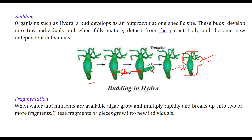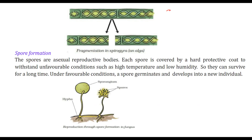Fragmentation: when water and nutrients are available, algae grow and multiply rapidly. The algae break up into two or more fragments, and these fragments grow into new individuals. The algae disintegrates into parts and then multiplies hierarchically into multiple parts. This is fragmentation in algae, also known as spirogyra.